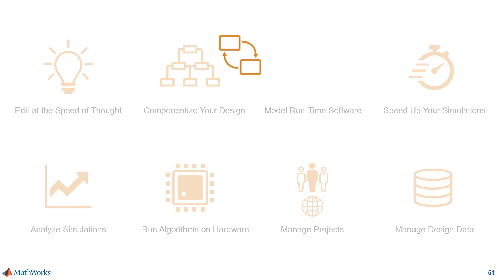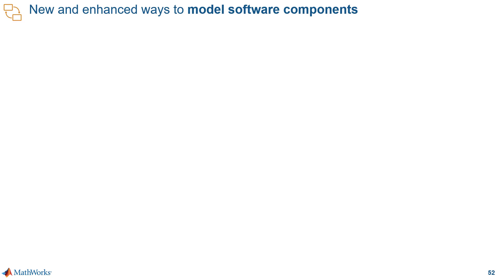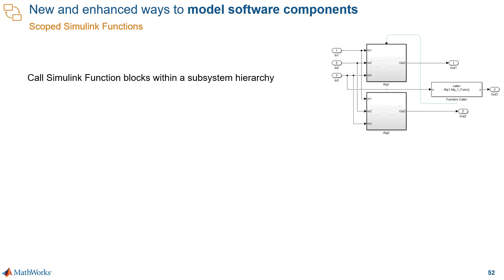One example of this are Simulink functions. Simulink functions have been around since release R2014b. Initially, they were global in scope, so you could call them from any part of the model. Now we're introducing scoping, which helps you encapsulate components. That means you can have Simulink functions within a subsystem, closer to where they're used and also scoped to that subsystem.